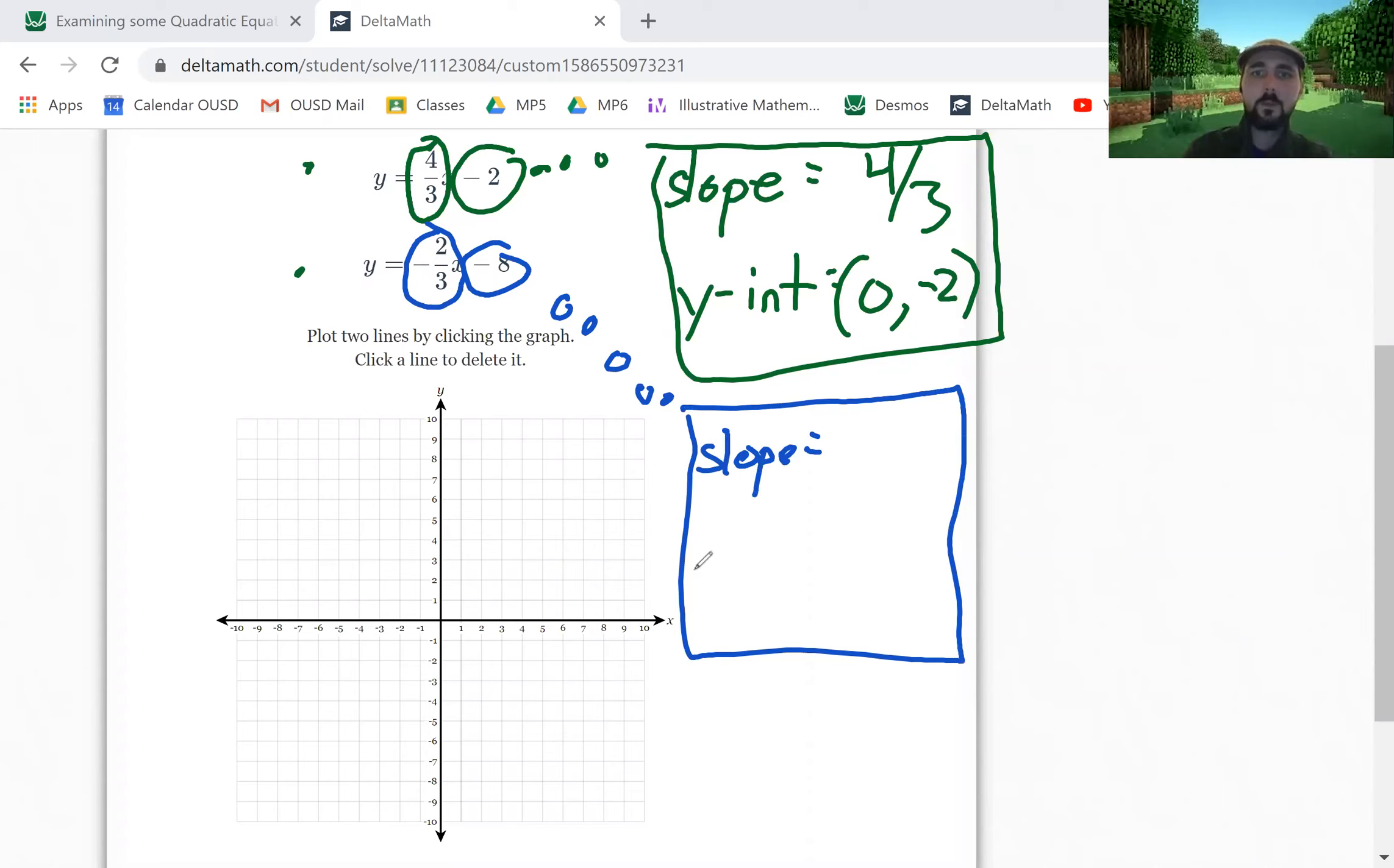I know that these two values tell me the slope and the y-intercept. The slope is just that fraction, negative 2 over 3, and the y-intercept is the negative 8, zero comma negative 8.